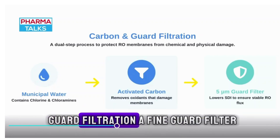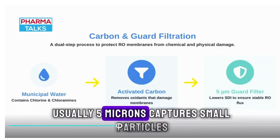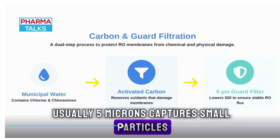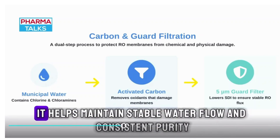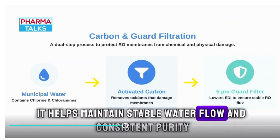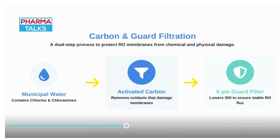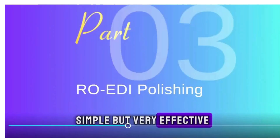A fine guard filter, usually 5 microns, captures small particles. This ensures that RO membranes aren't clogged or fouled. It helps maintain stable water flow and consistent purity — simple, but very effective.